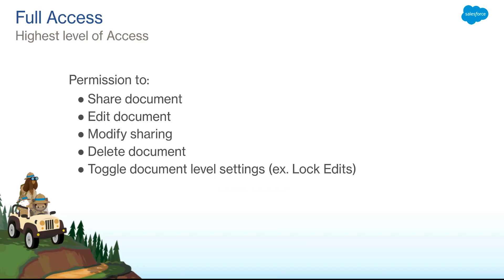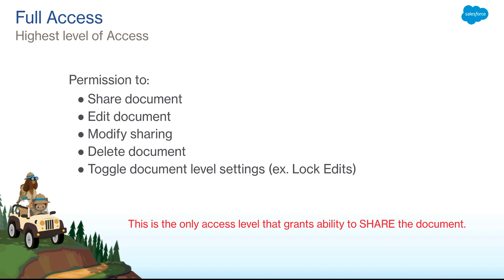Full access corresponds to the existing level of access that normal Quip thread members have. All current full thread members will default to full access. Full access users have permission to share the document, edit a document, modify sharing such as editing link sharing, adding and removing thread members, editing access levels, adding or removing folders, deleting a document, or toggling a document-level setting such as lock edits. Please note, full access is the only access level that grants the ability to share a document.